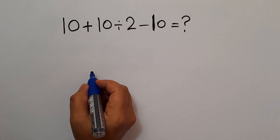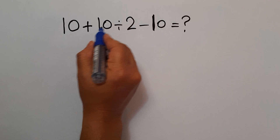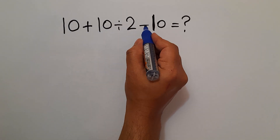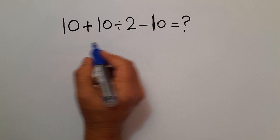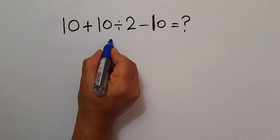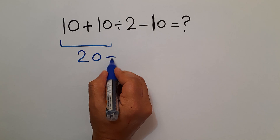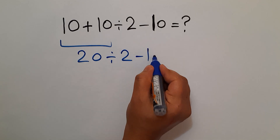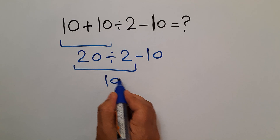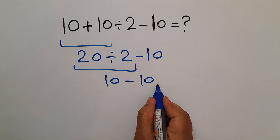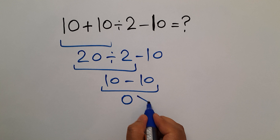Hey guys, welcome to this video. We want to calculate this expression: 10 plus 10 divided by 2, then minus 10. Are you ready to solve? Let's get started. 10 plus 10 equals 20, so 20 divided by 2 then minus 10. 20 divided by 2 is 10, and 10 minus 10 gives us 0. But this answer is not correct.